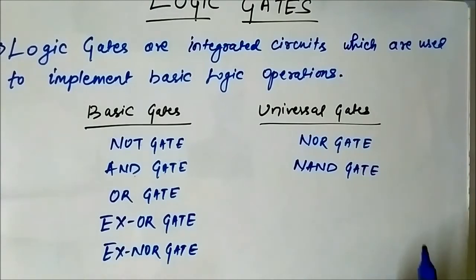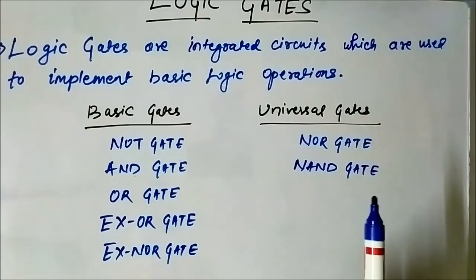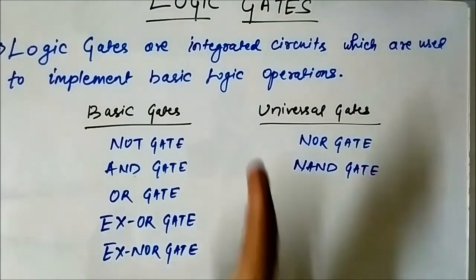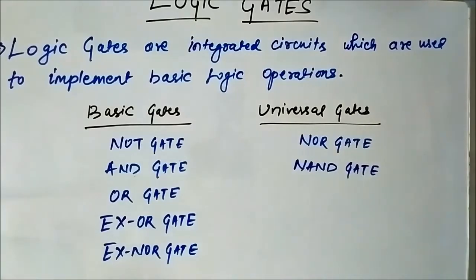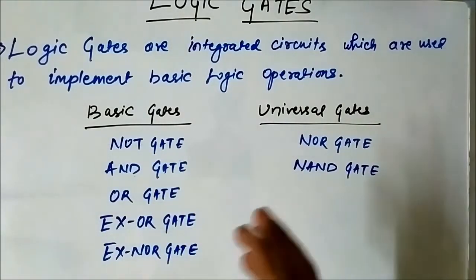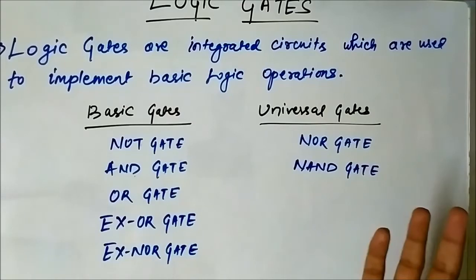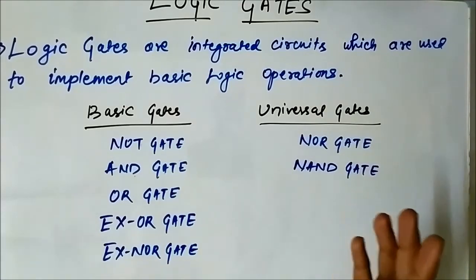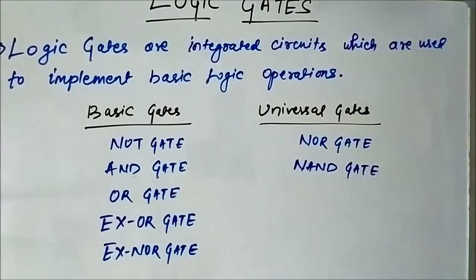So this is the categorization of the logic gates, and we will discuss each of the basic gates — their symbols and truth tables — one by one in detail.